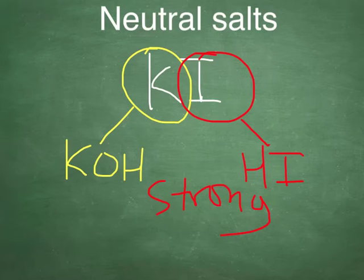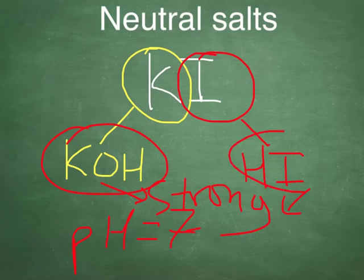And because both of the parts of the salt came from strong acid and strong base, the pH is going to be equal to, approximately equal to, 7. And that's true of all salts that come from strong bases and strong acids.